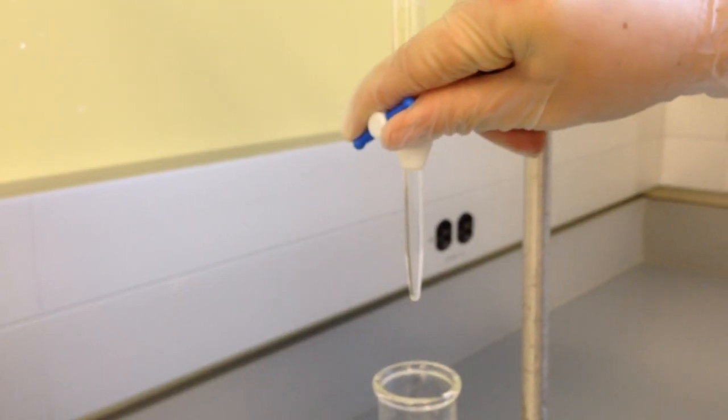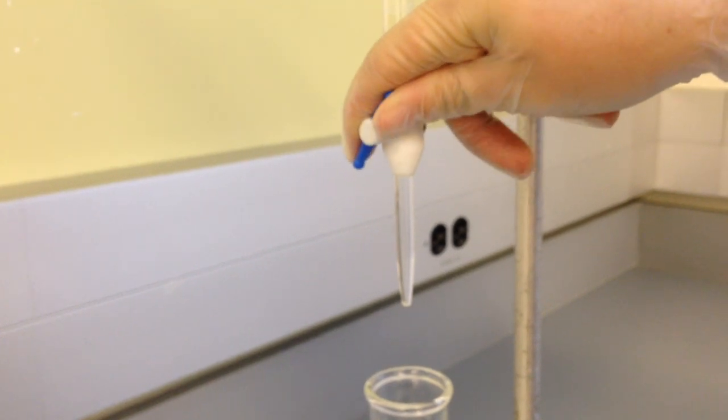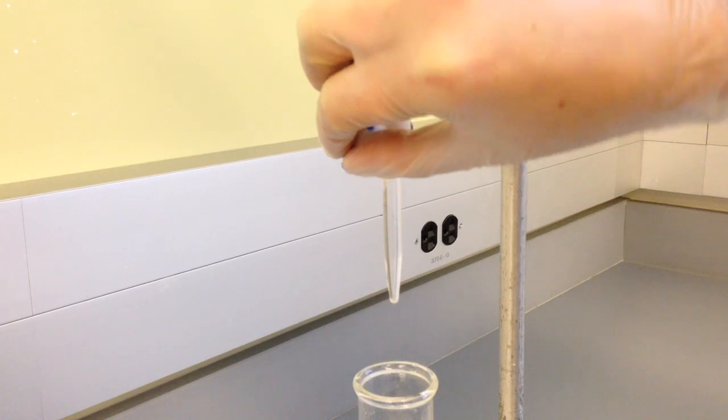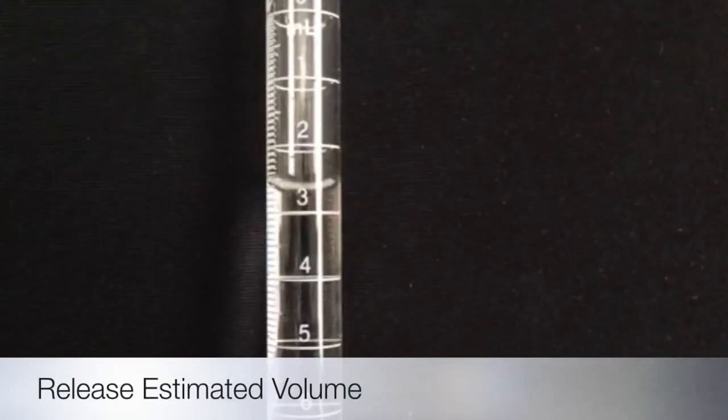To begin your titration, turn the stopcock from the closed horizontal position to the open vertical position, as shown. Enough titrant should be added to get near the endpoint. This allows an accurate titration.